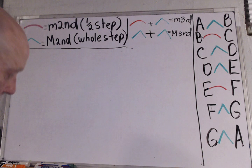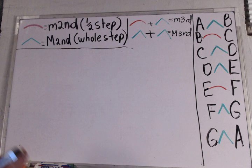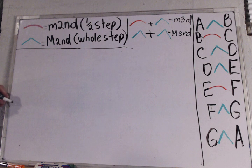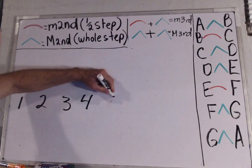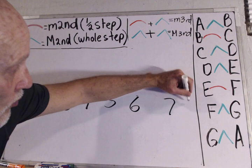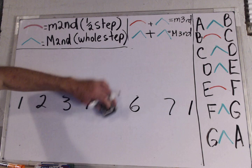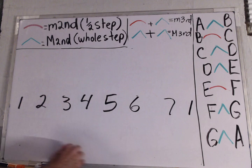So the first thing we do is start by writing down the scale degrees for the key. Let's do that first. Scale degrees one, two, three, four, five, six, seven, and then we're back up to one.